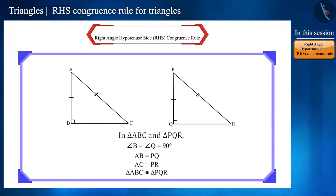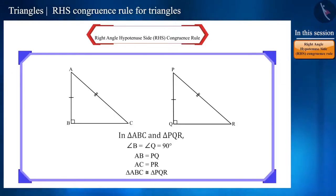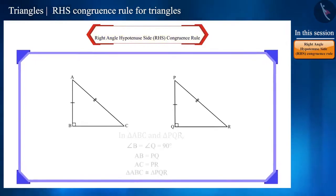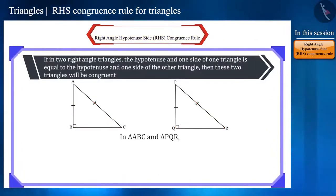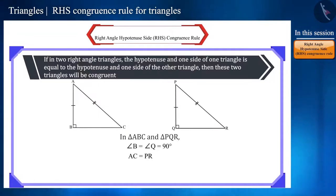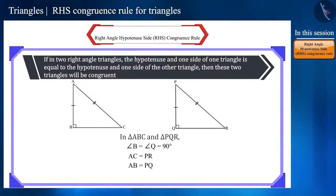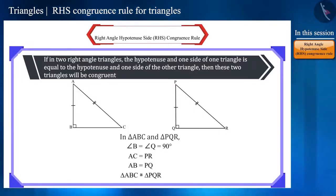This is a test for the congruence of triangles and we use this to verify the congruence of right angle triangles. We call this the RHS congruence rule. If in two right angle triangles, the hypotenuse and one side of one triangle is equal to the hypotenuse and one side of the other triangle, then these two triangles will be congruent. Therefore, this is called the RHS congruence rule.